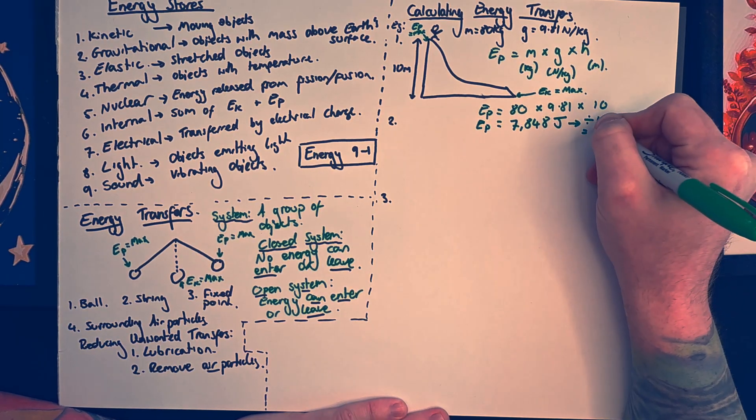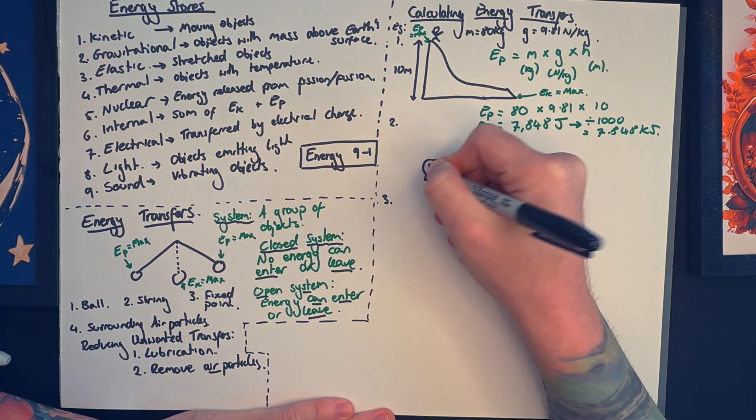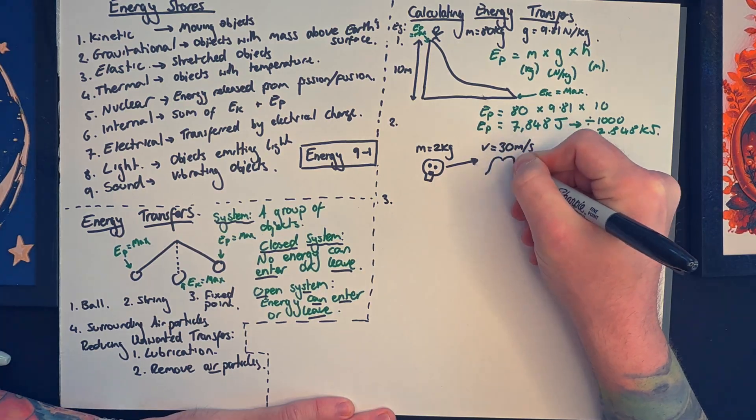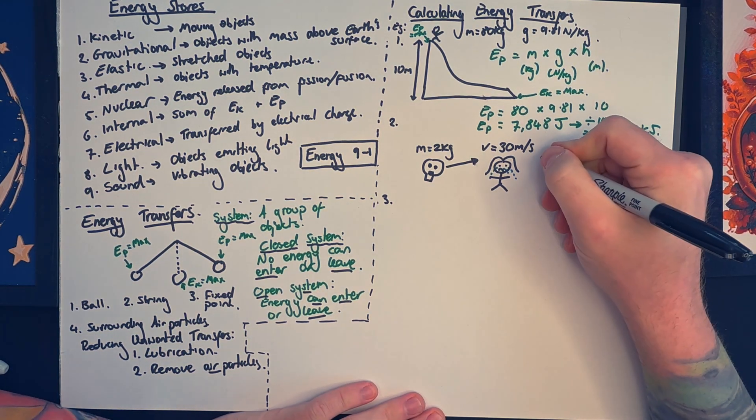In the next system, I have my nan's skull with the mass of two kilograms, and I'm very kindly kicking it into Catherine's head. I'm kicking my nan's skull at a velocity of 30 meters per second. So in this system I'm going to try and calculate the kinetic energy transferred via my nan's skull to Catherine's head.